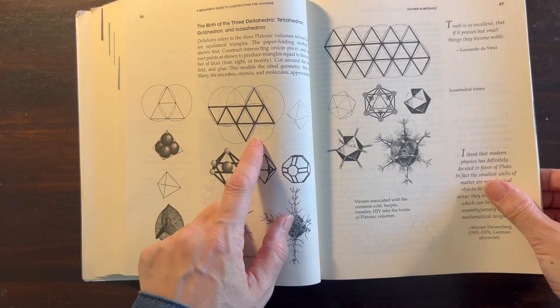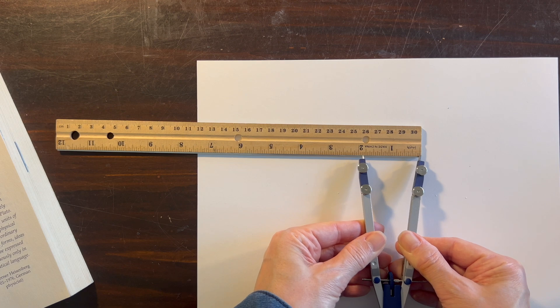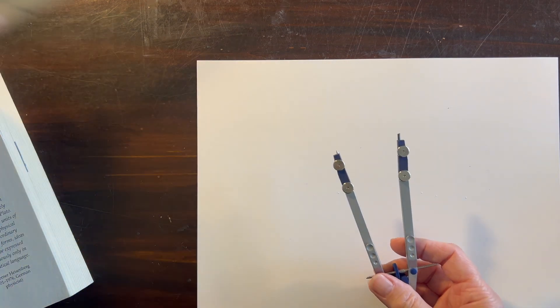So I'm going to teach you how to do the regular solid, the octahedron. I'm going to measure about 2 inches for my compass. You can do this larger or smaller depending on the size of your paper.